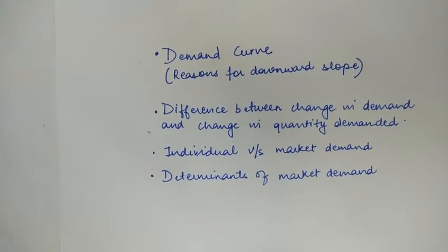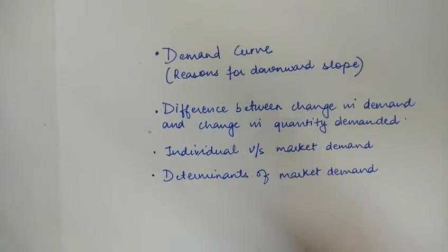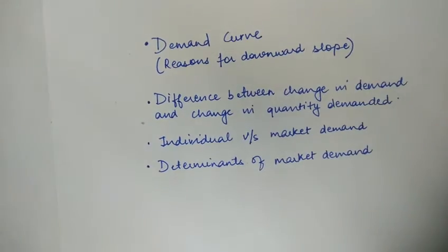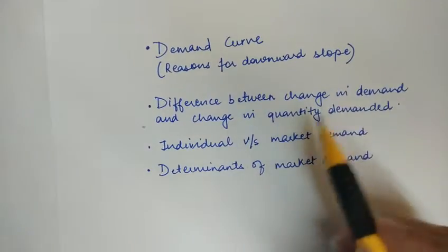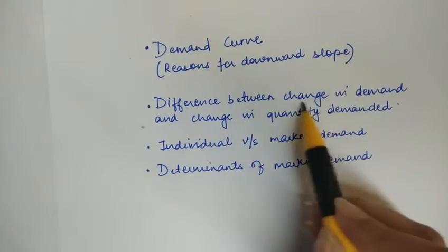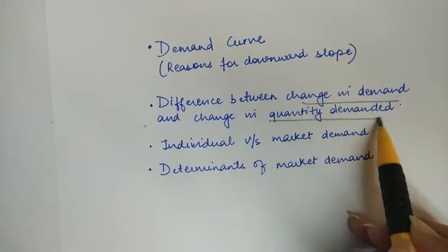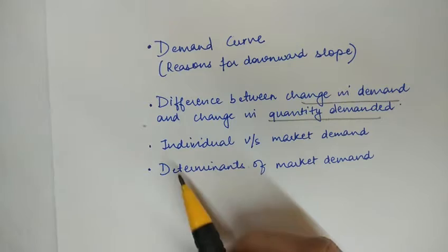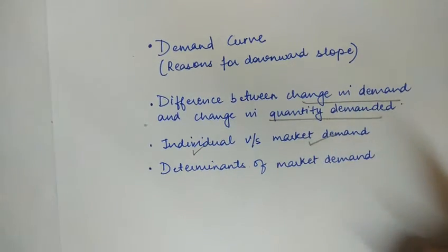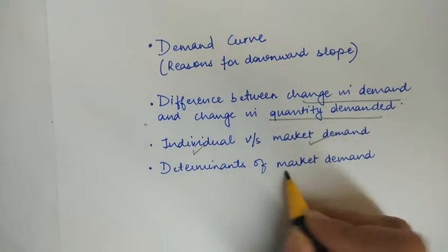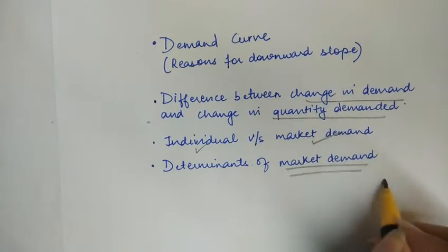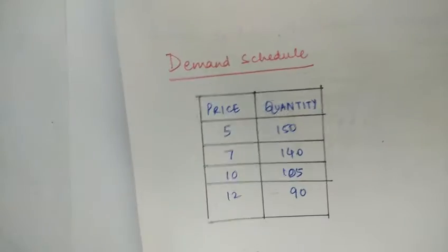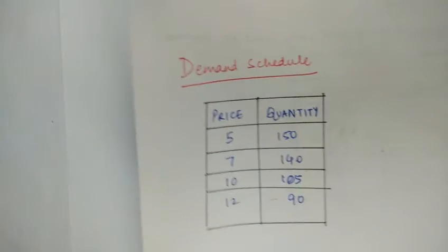This lecture covers the demand curve, reasons for the downward slope of the demand curve, the difference between change in demand and change in quantity demanded, the difference between individual and market demand, and determinants of market demand.